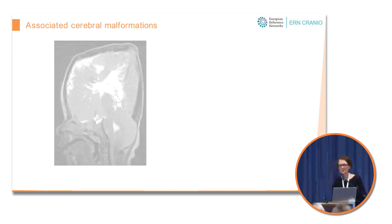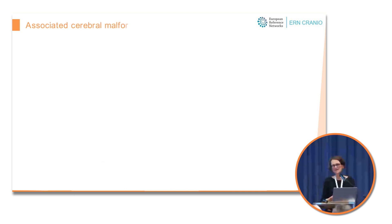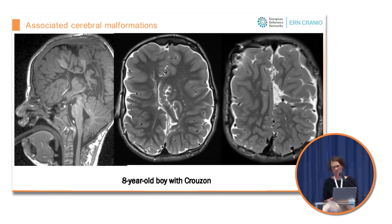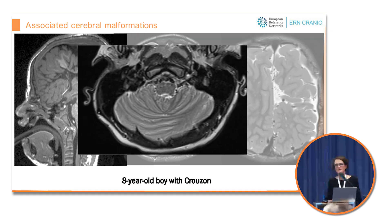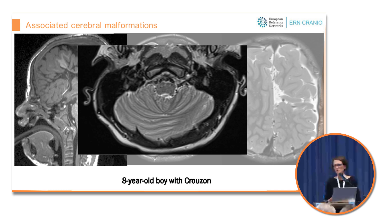Sometimes we find really various malformations in one patient, as in this boy with Crouzon syndrome. He has commissural agenesis — meaning a missing corpus callosum — extensive dysgyria, and also rhombencephalosynapsis. As I said, I don't see these malformations very often and I definitely don't see a specific pattern, maybe because they are so rare. That's why we really need to collaborate and collect these cases to gain more insight.